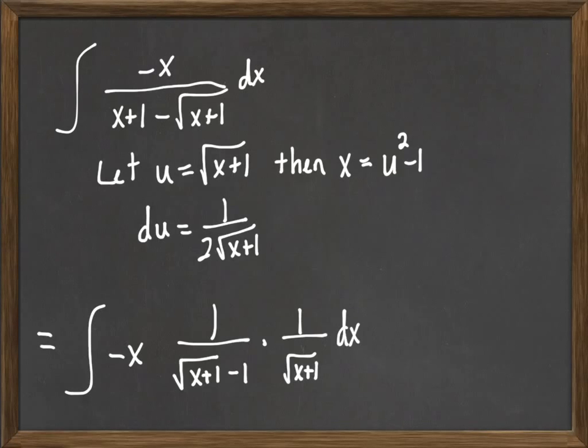Now you see we have exactly or almost what we need to carry the substitution through, except I need to have a 2 there. And what I'm really doing is I've really multiplied by 1 and a half there, so on the outside I should multiply by 2.